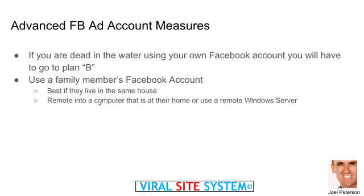Another option besides remoting into their home computer is using Windows servers. There are ISPs or computer companies that have these little Windows server boxes — you can remote into one and have a full desktop where you're accessing it like a different computer remotely. The key is that the remote Windows server needs to be in the same location as where the Facebook ad account is. Search Google for 'remote desktop servers' or 'remote Windows servers' in your city, ask them where the IPs are located, and choose accordingly. Another advanced technique is proxy servers and proxy IP addresses, which gets quite technical — contact support if you need help with that.